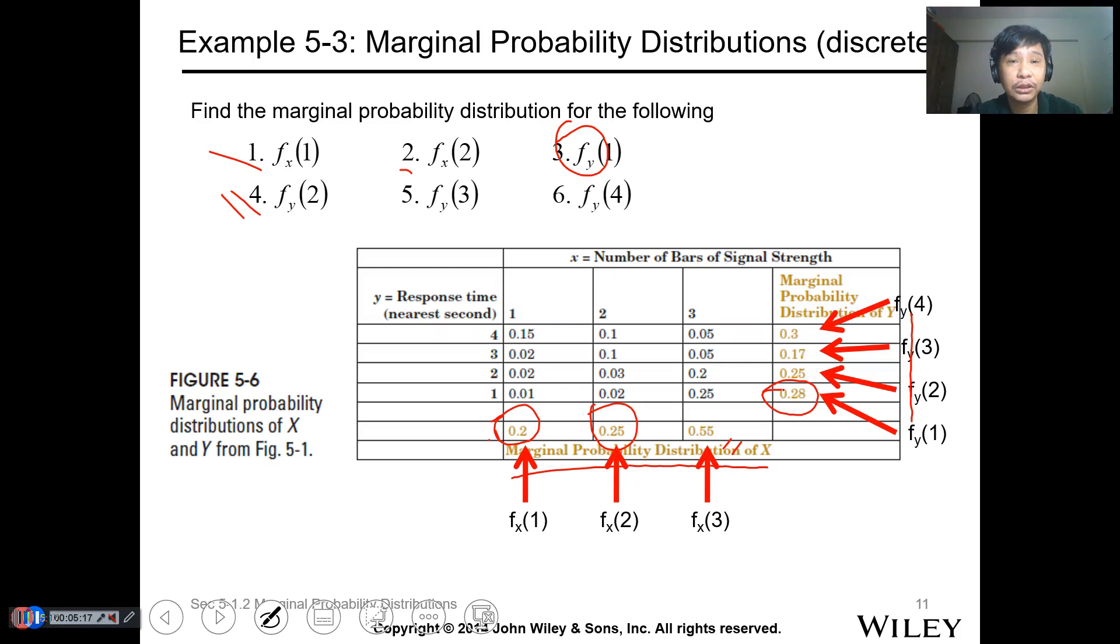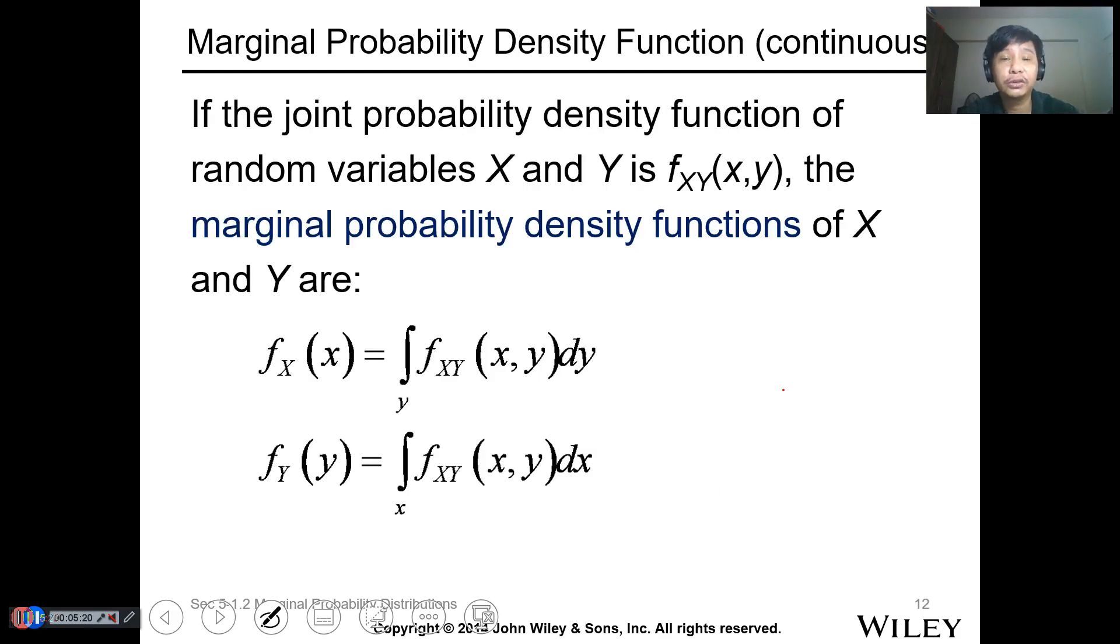Now, for continuous function probability, in order to get the marginal probability density function, we need to transform f(x,y) into a function of x. Same with the marginal probability of y - transform f(x,y) into a function of y. For f(x), you just get the integration of the function with dy for all values of y. Same for y, integration with dx for all values of x.